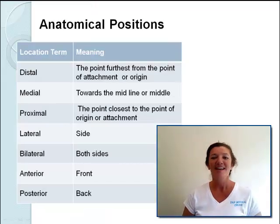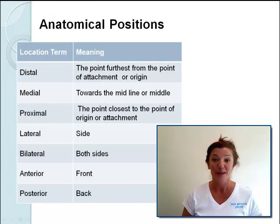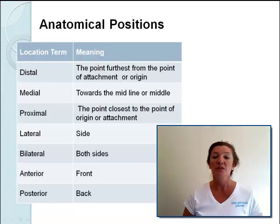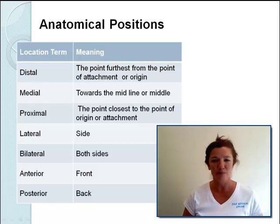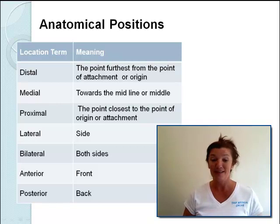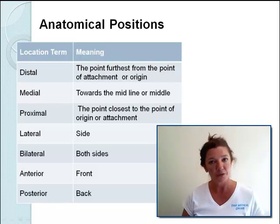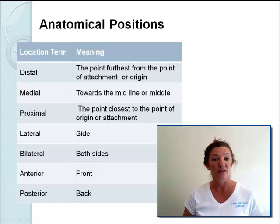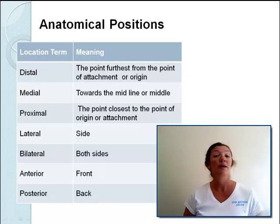Anatomical positions. In medicine, terms are used to describe different parts of the body and their location relative to each other. Distal: the point furthest from the point of attachment or origin. Medial: towards the midline or the middle. Proximal: the point closest to the point of origin or attachment — think 'close proximity.' Lateral: side. Bilateral: both sides. Anterior: the front view. Posterior: the back — so a posterior view would be looking at someone's backside.